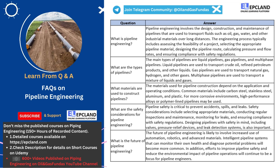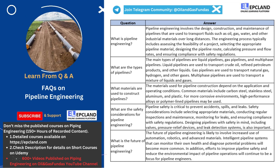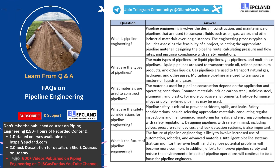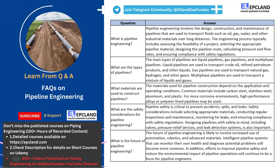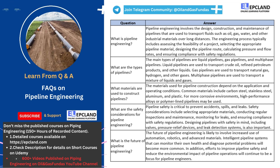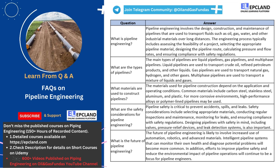Now let's move to the last question of this session: What is the future of pipeline engineering? Pipeline engineering has been an essential field for the transportation of fluids like oil, gas, and water over long distances. As technology continues to advance, the future of pipeline engineering is expected to see significant changes. One of the most significant developments is the increased use of automation, robotics, and advanced materials. Automation and robotics can improve the efficiency of pipeline operations by reducing the need for human intervention, helping monitor and diagnose potential issues, resulting in faster response times and reduced downtime.